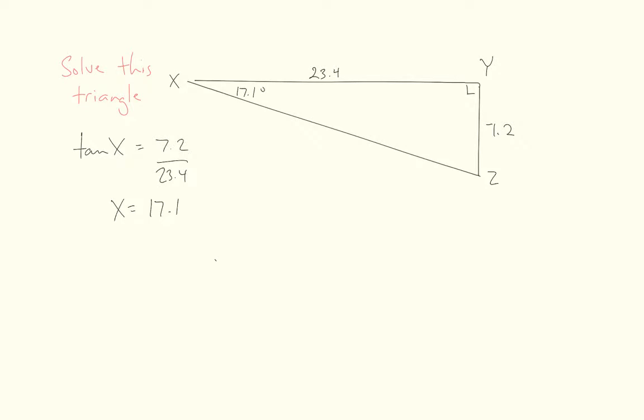Of course, once you've found one angle inside a right angle triangle, you don't have to use trig to find this one, right? Because you know that the three angles always add up to 180 degrees. So it's quick finding out the other one. So therefore, Y equals 72.9 degrees.